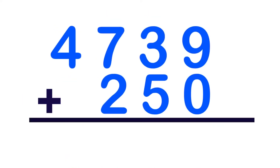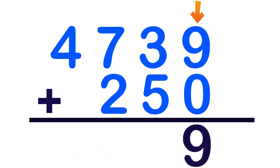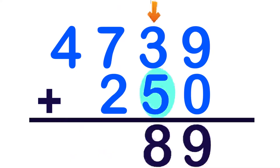How about if we have 4,739 plus 250? Again, we are going to start at the 1's place. 9 plus 0 — any number that you add by 0, the answer is the number itself. So, 9 plus 0 is equal to 9. Let's proceed to the 10's place. 3 plus 5 — digit 5, 5 on your mind: 5, 6, 7, 8. So, 3 plus 5 is equal to 8.